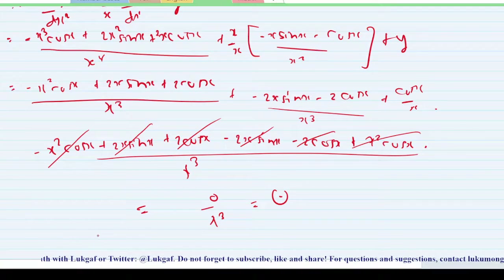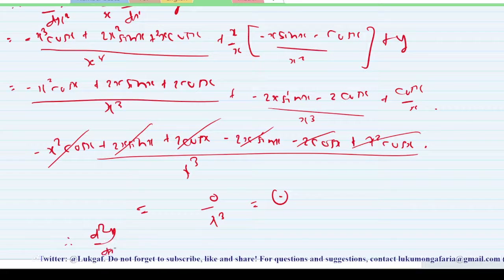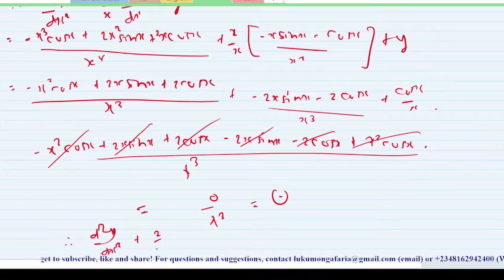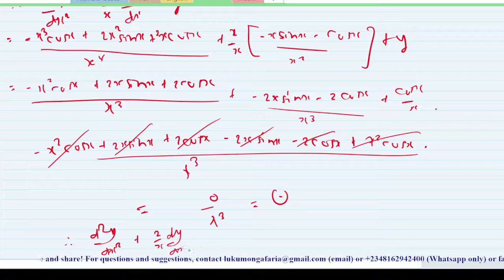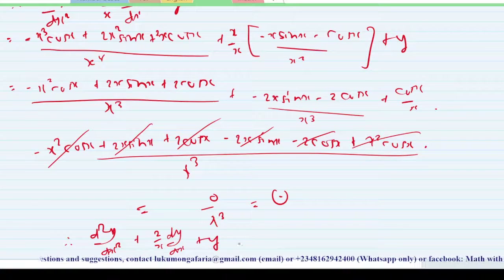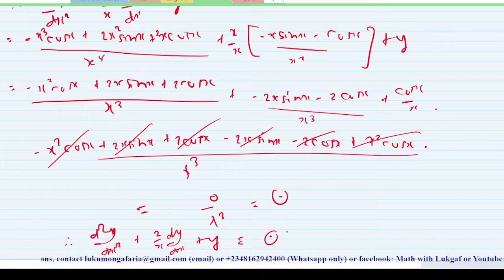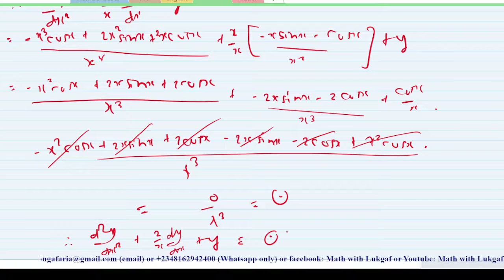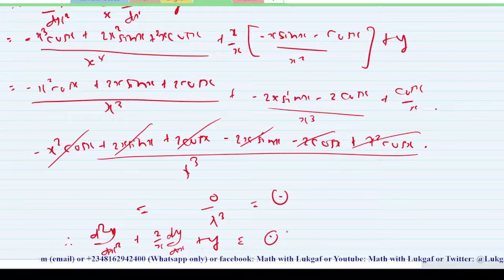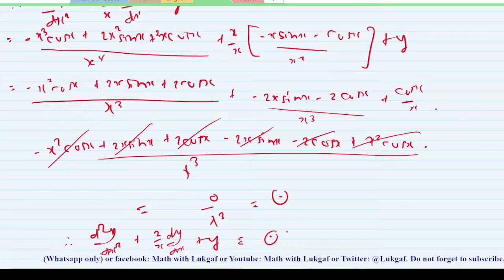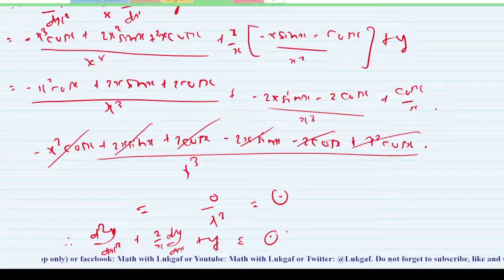Therefore, d²y/dx² plus 2/x · dy/dx plus y is equal to zero. Very simple as that. If you benefited from this video, please don't forget to subscribe, like, and share with your colleagues. Thank you.